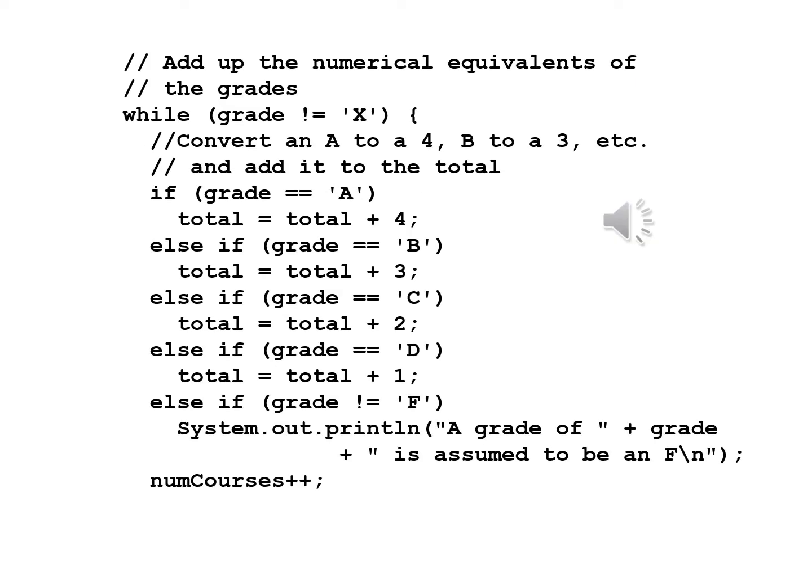Next, add up the numerical equivalents of the grades. While grade is not equal to 'x' — x being what will end the program for us — after the open brace, we convert an A to a 4, B to a 3, and so on, and add it to the total. Here you can see the long run of ifs and elses. If grade is equal to 'A', total = total + 4. Else if grade is equal to 'B', total = total + 3.